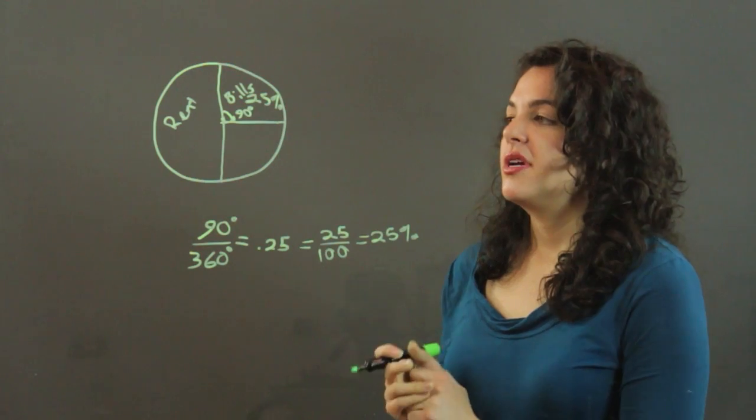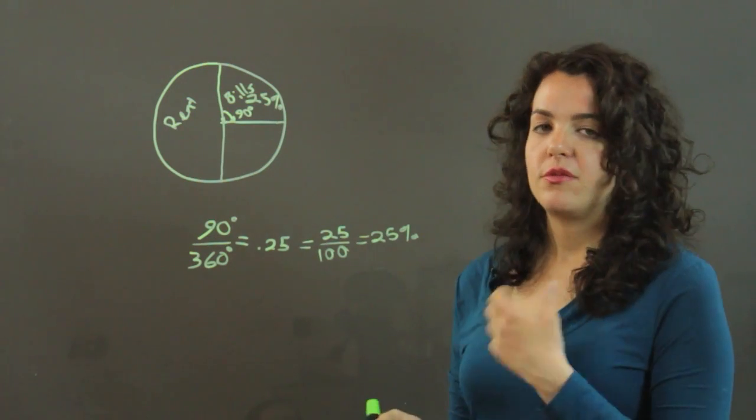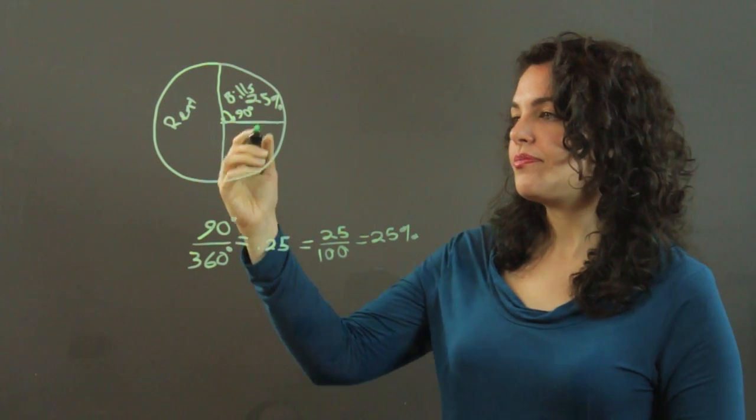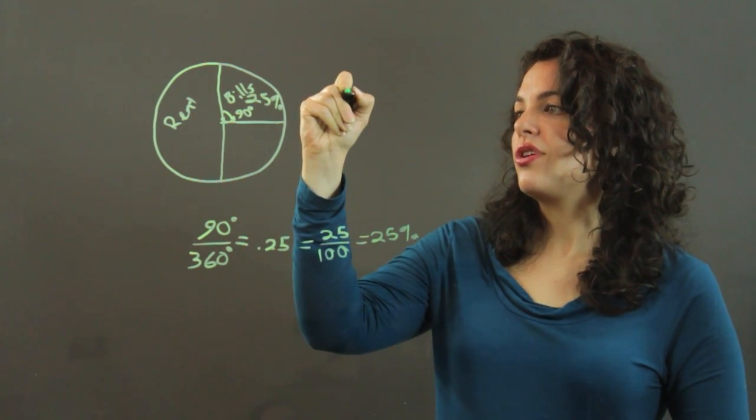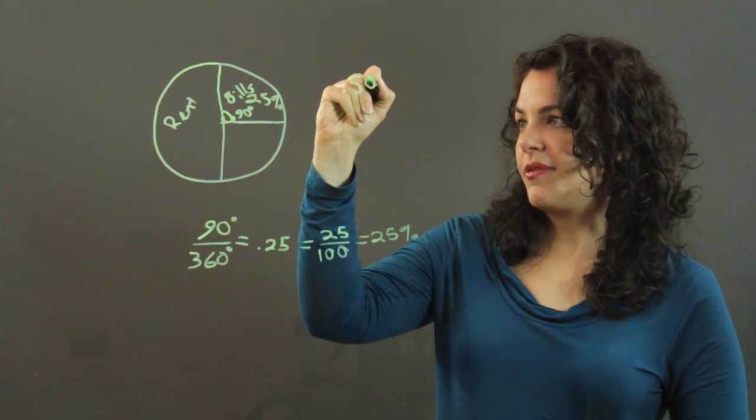Or you can go the opposite way. Let's say you already know that you pay 50% rent. What's the degrees that I would need to draw on my pie chart? If you know that you start out with 50%, then you write the decimal form, 0.5,